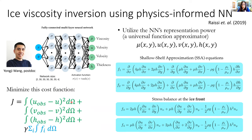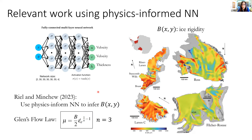We minimize a cost function with two parts. The first is the data misfit — minimizing the difference between the neural network approximated velocity and thickness and the observations. The second is the equation misfit — minimizing the residuals in the shallow shelf equations as well as the stress balance condition near the calving front. Physics-informed neural networks have been applied to learning ice rheology in a paper by Ryan and Mitchell, where they assumed Glen's flow law and inferred the ice hardness parameter B, obtaining results that look quite good.